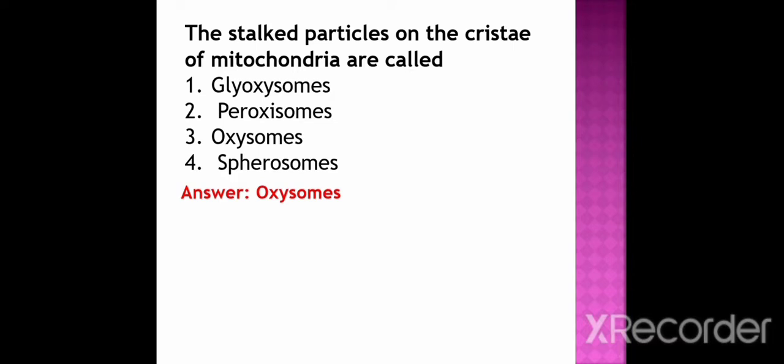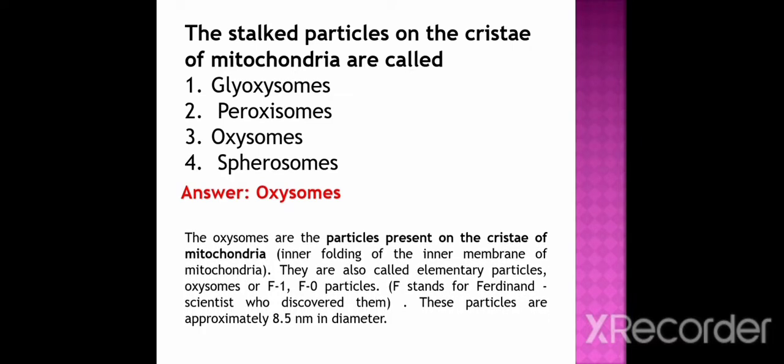Now let's know about the Oxysome. Oxysomes are the particles present on the cristae of mitochondria. These are the inner folding of the inner membrane of mitochondria. They are also known as elementary particles or F1-F0 particles, where F stands for Ferdinand, the scientist who discovered this Oxysome. These Oxysome particles are approximately 8.5 nm in diameter.